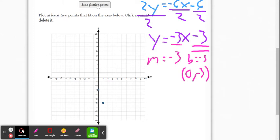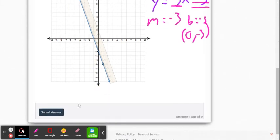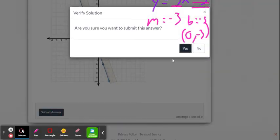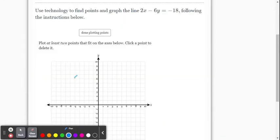Once you've done that, you say done plotting points. It gives you the ruler here. And we're just going to draw our line. So you practice actually drawing your line through those two points. And we're done. So then what we do is we just go down here and say submit our answer.